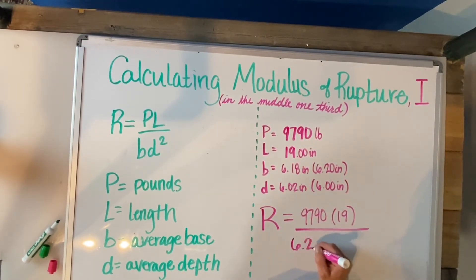And we're going times 6 squared and that is going to give us, 9790 times 19 is going to equal 186010.